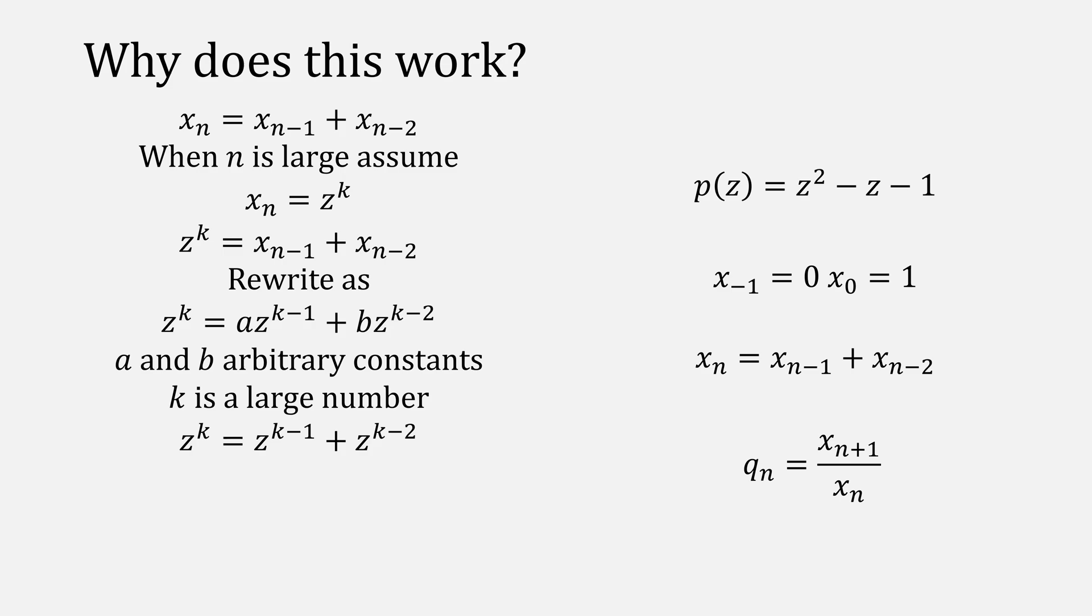If we then set that equal to 0 and factor out z to the k minus 2, what we're left with is z squared minus z minus 1 equal to 0, which was our original polynomial.